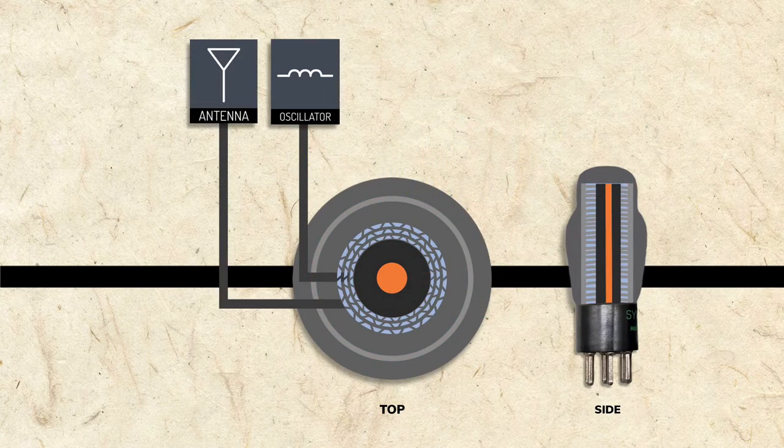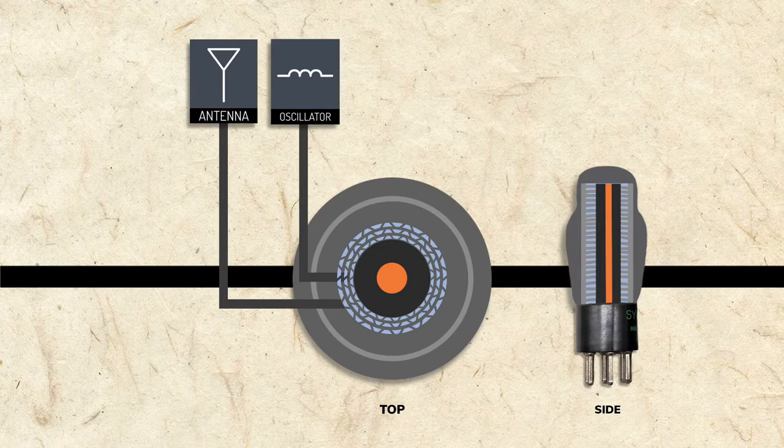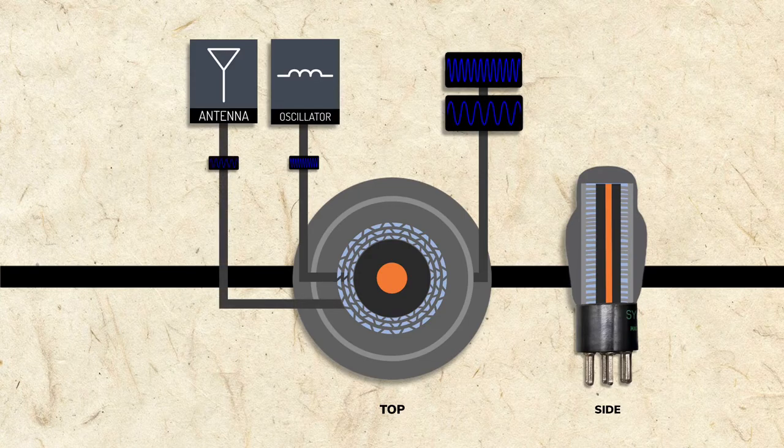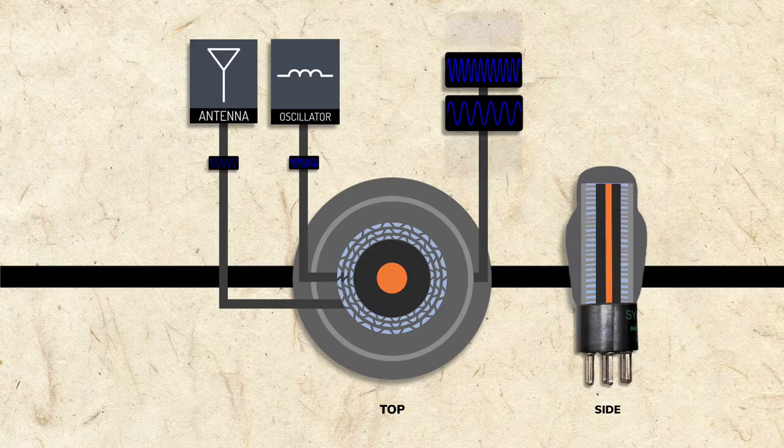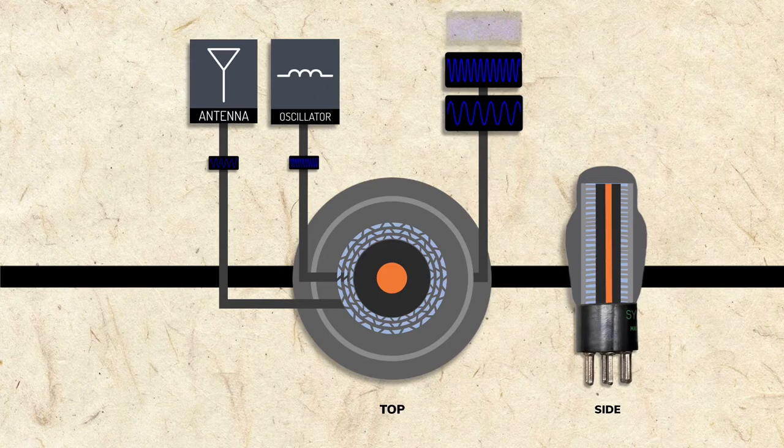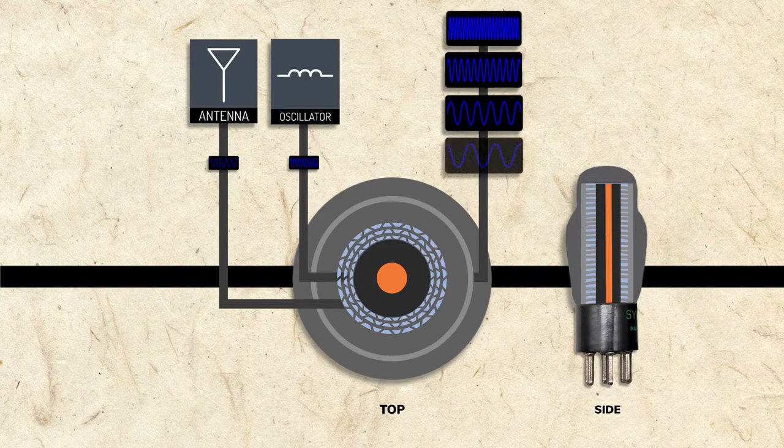So the plate not only has the amplified oscillator signal, it has the amplified radio signal. And as we've learned, when two frequencies are mixed, you get four frequencies: the original 2, the sum, and the difference, which is the important IF signal.